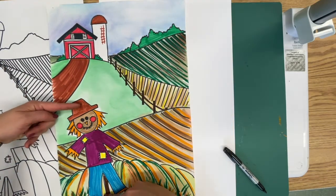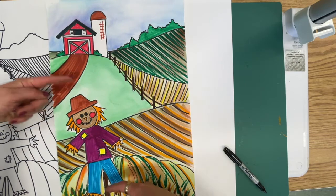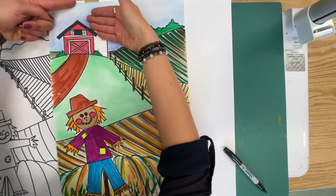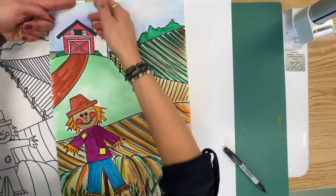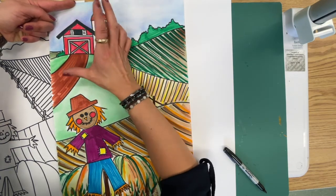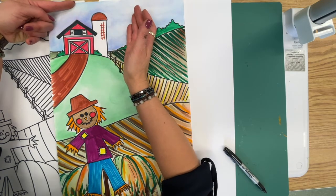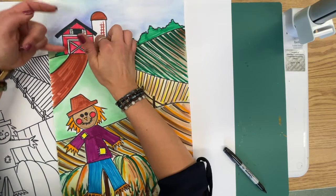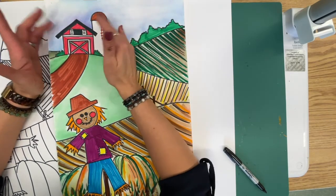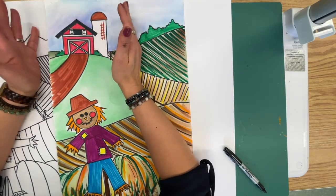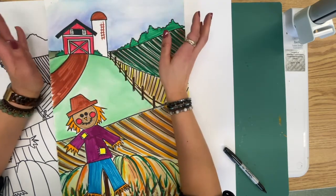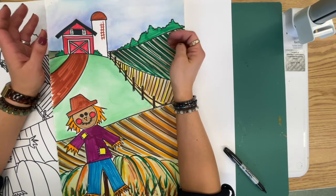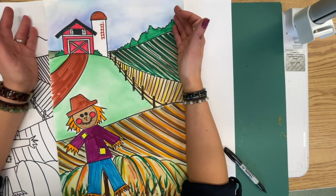Then you move way further back and you have the background. If you look at the proportion of our scarecrow here, he's much bigger than our barn. But we know in real life, the barn is much bigger than a scarecrow. Because the barn is further away, it is smaller. It doesn't have a whole ton of detail. Like you can't see if there's cracks in the barn or berries on the bushes or anything like that. You can just see the overall shape without a lot of detail. You get less variations of color. A lot of times it gets darker as you move further away.